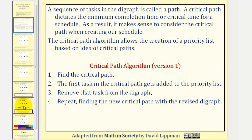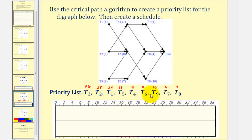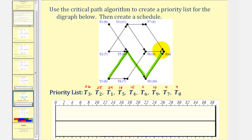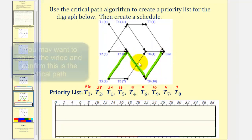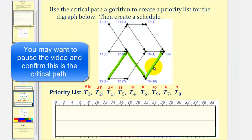Let's take a look at our example. To save some time, I've already listed the tasks in the correct order based upon the critical path algorithm, as well as the total time of the path given above in red, but let's take the time to verify this. Using the original digraph, the critical path starting at task three would be task three, task five, task nine, to the end. Notice how the total time would be eight plus eight plus ten hours, which is twenty-six hours. No other path would be more than twenty-six hours, which is the reason why task three is first on the priority list.